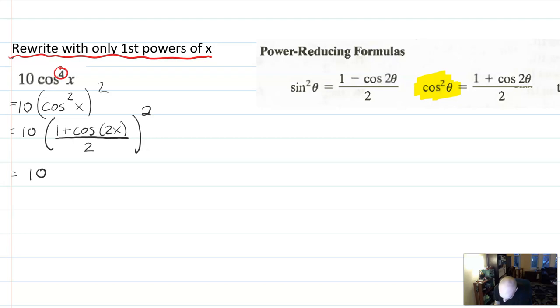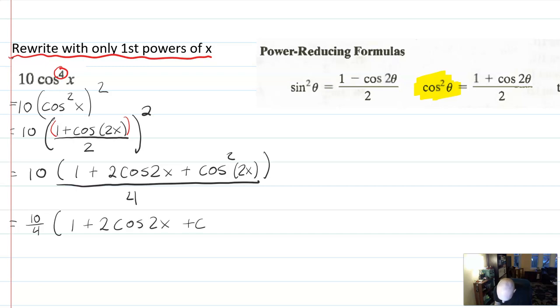So that 10 is going to stay there. But guess what? You have to foil this out. So this is going to be over 4, because 2 squared is 4. And then it's going to be 1 plus 2 cosine 2x plus cosine of 2x quantity squared, which we'll write as cosine squared 2x. All over 4. Okay. So we could bring out this 10 over 4. And then mark this as 1 plus 2 cosine 2x plus cosine squared 2x.